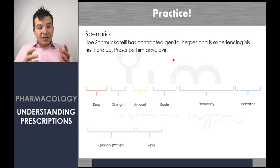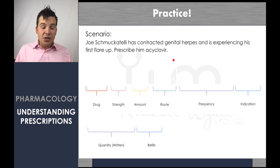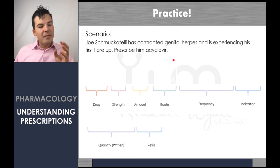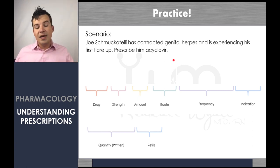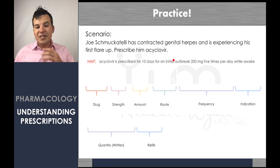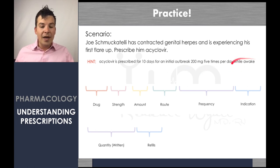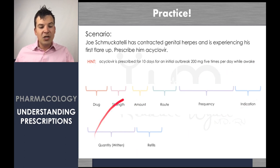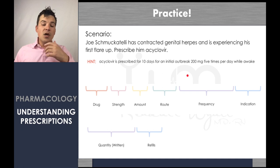Let's look at another example. Joe Schmucatelli has contracted genital herpes and is experiencing his first flare-up. Prescribe him acyclovir. If you're at the provider level, I'd recommend you pause it right here, look it up on your own, and write the actual prescription out for practice. Here's what the actual prescription for acyclovir is: acyclovir is usually prescribed for 10 days for an initial outbreak at 200 milligrams, five times per day while awake.